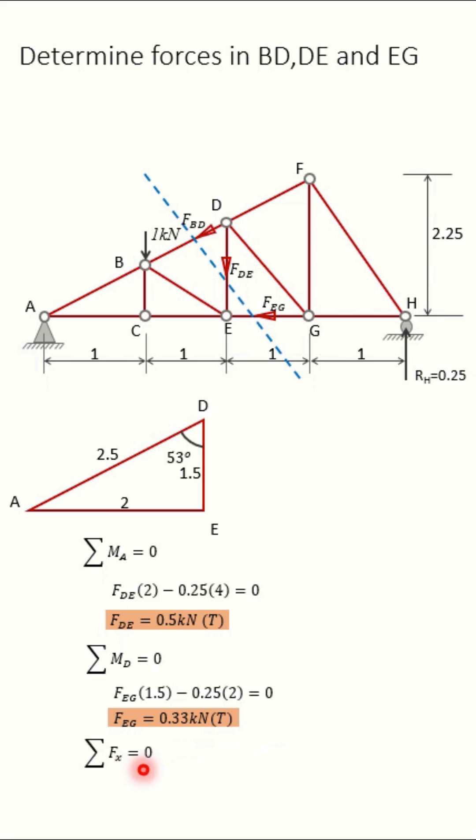Now apply sigma FX equals zero. For that, bring all forces at one point to this side. So application of sigma FX equals zero. FEG minus FBD sine 53, and FEG equals zero. From this, you will get FBD equals minus 0.33 divided by sine 53 equals 0.417 kilonewtons.